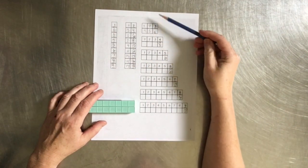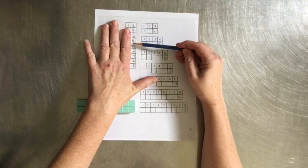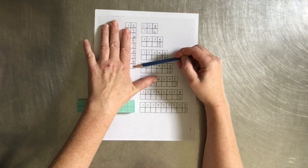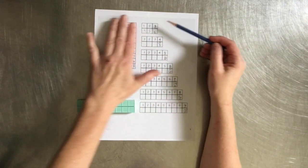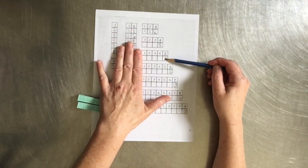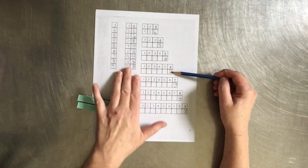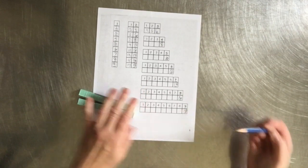But they don't necessarily have to because the point here is we're counting 2's, 2, 4, 6, 8, 10, 12, 14, 16, 18. We're counting 1's, 1, 2, 3, 4, 5, 6, 7, 8, 9. Here we're counting 3's, 3, 6, 4's, 4, 8, 5's, 5, 10, 6's, 6, 12, 7, 7, 14, 8, 8, 16, 9's, 9, 18.